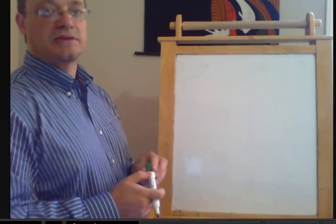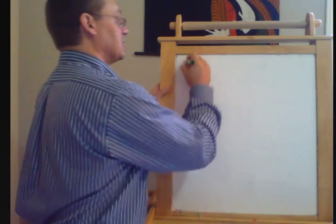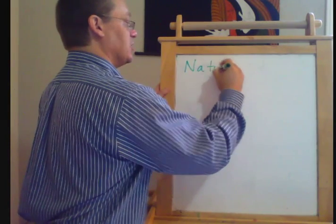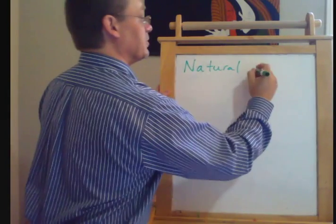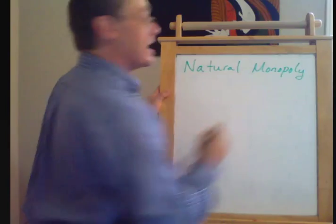Okay, so now let's talk about one potential way that we can have monopolies arise. And we're going to use the green pen because I think it's more visible. And that's the issue of natural monopoly.